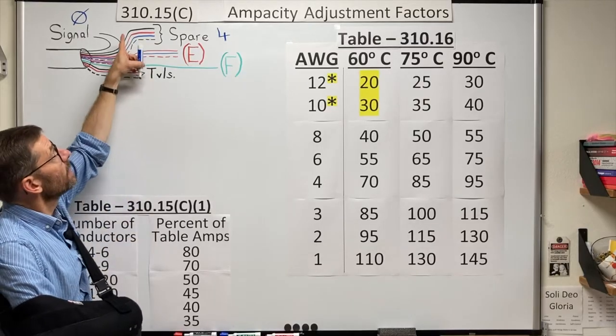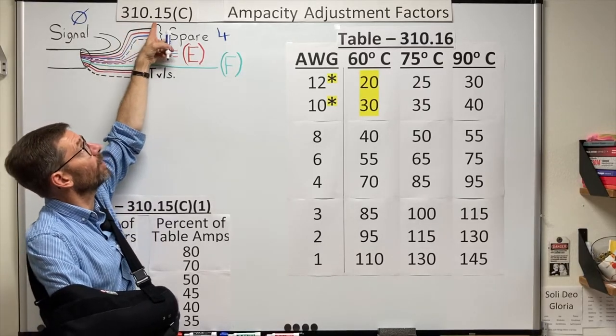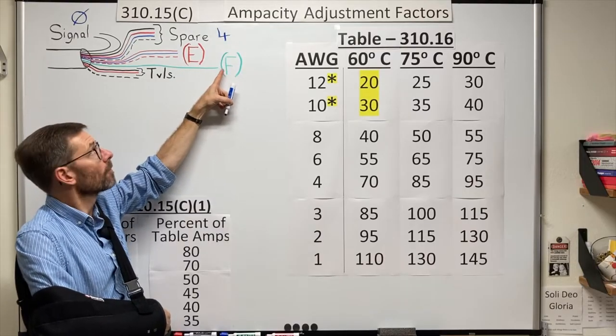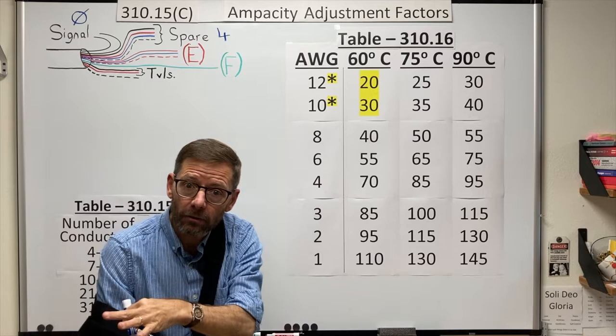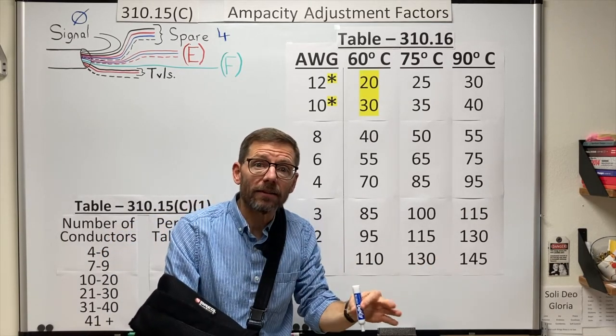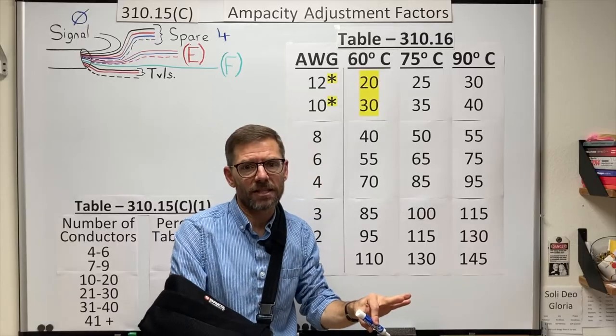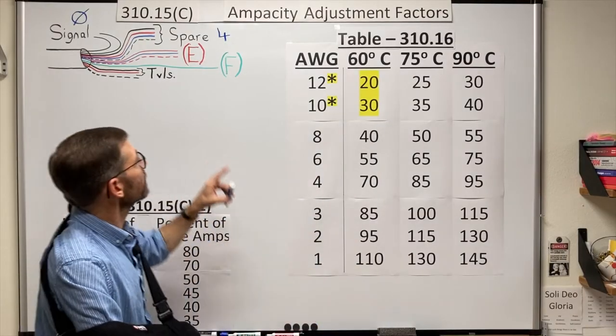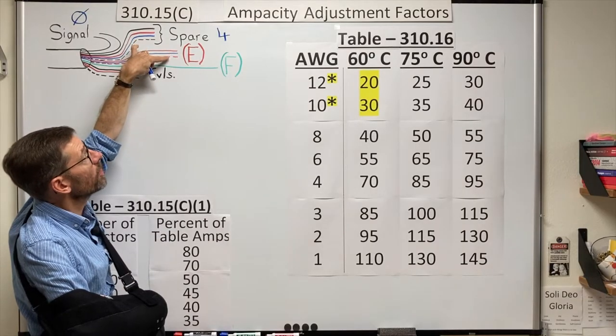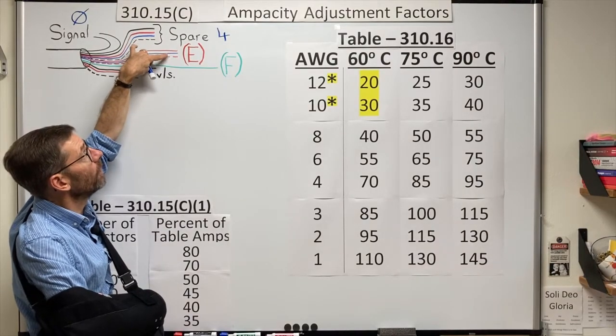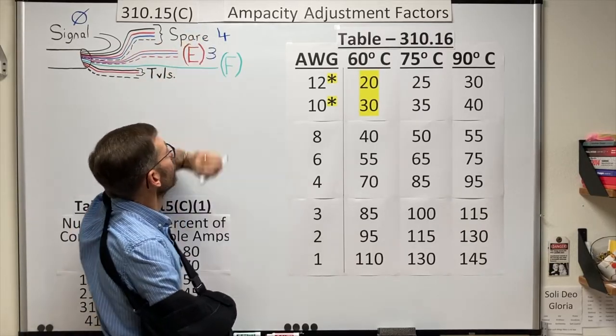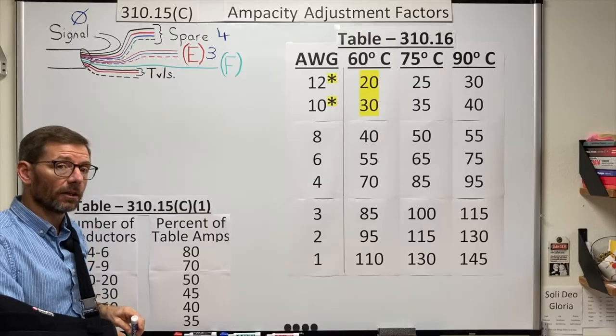The second sentence tells me to look at 310.15(E) and (F). Now E answers the question, do I count the neutral or not? I have another video on that to talk about the specifics of that section. But for now, let's just say here, if I have two phases of a three-phase system with a shared neutral, I would need to count all of them, the neutral included. So here I have three current-carrying conductors.